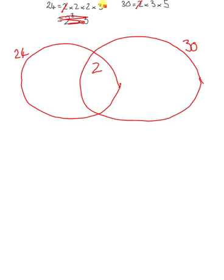Another number that's common to both is 3. So cross those out. The 3 is going to go here. So it's in the circle for 24 and it's in the circle for 30.